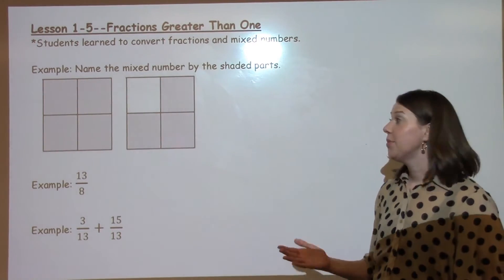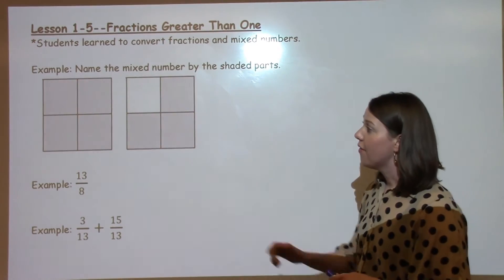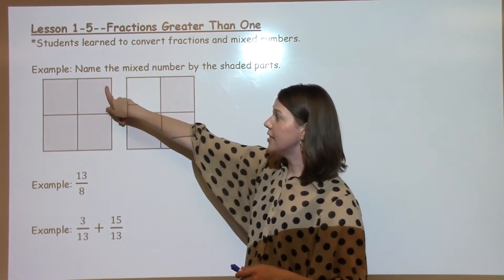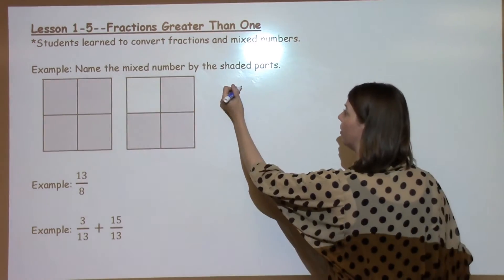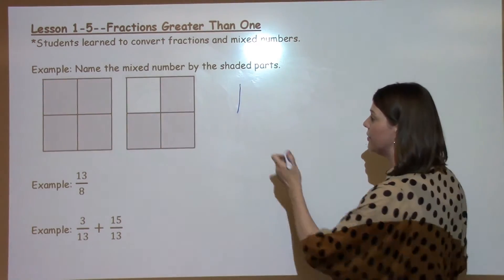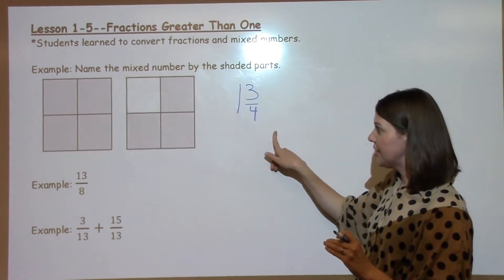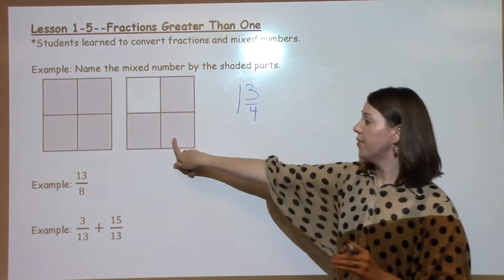One of the things the students encountered today was looking at diagrams to make mixed numbers. Look at this first diagram, we have one whole filled in. So we know that is one whole. Looking at the next number, we see that we've got three of the four shapes. So this mixed number would be 1 and 3 fourths. So the representation of this is 1 and 3 fourths.